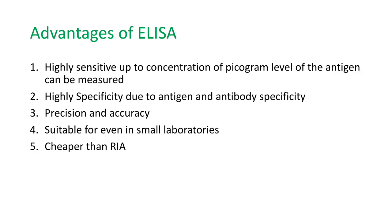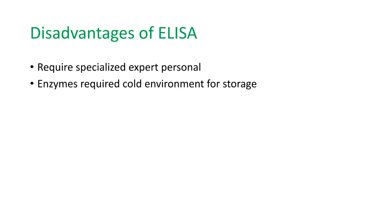Advantages of ELISA include high sensitivity — antigen concentrations down to picogram levels can be measured — and high specificity due to antigen-antibody interactions. It also offers high precision and accuracy, is suitable for small laboratories, and is cheaper than radioimmunoassay. Disadvantages include the requirement for specialized trained personnel to obtain correct results and reduce errors, and enzymes require cold storage conditions.